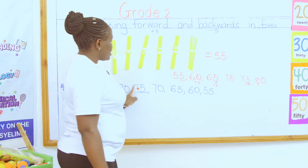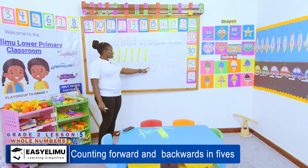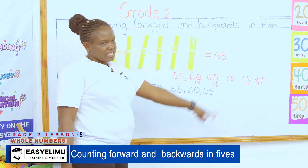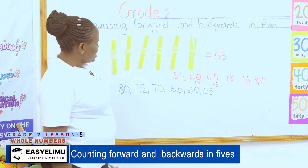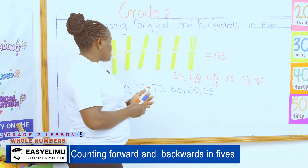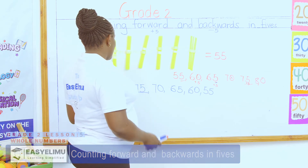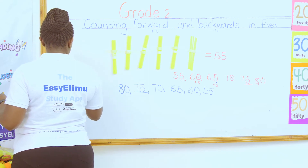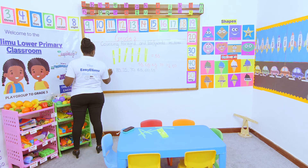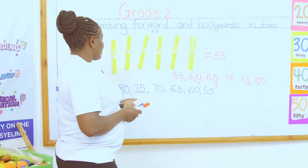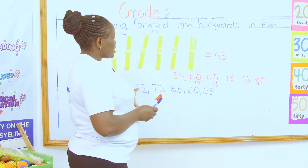So if you count forward in fives it will be: 55, 60, 65, 70, 75, 80, 85, 90, 95, 100. And if you're supposed to count backwards, we will start with 100. Then we come to 95, 90, 85, 80, 75, 70, 65.